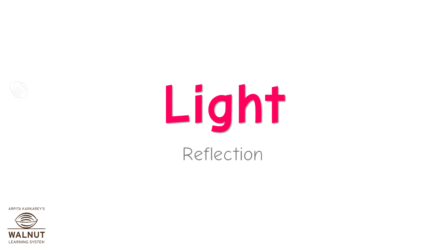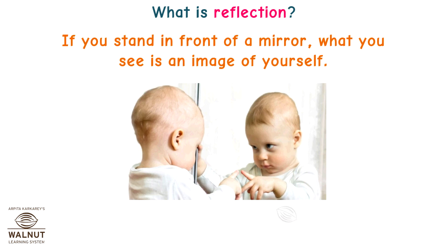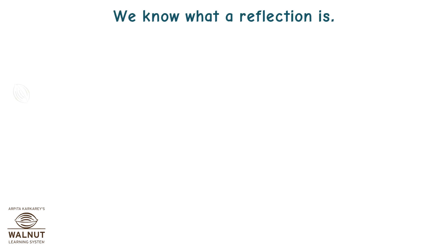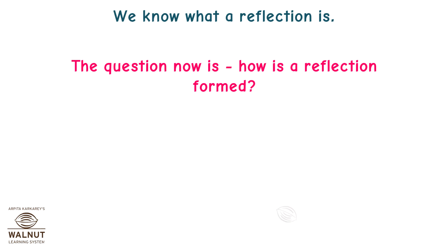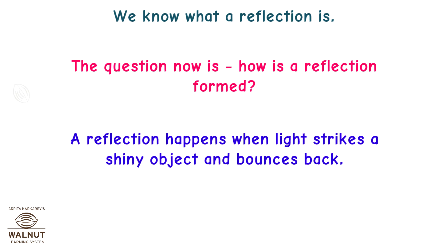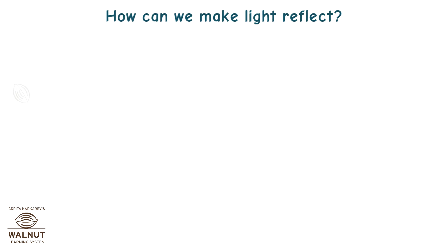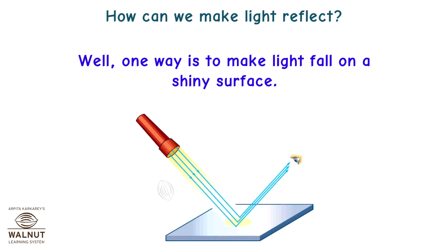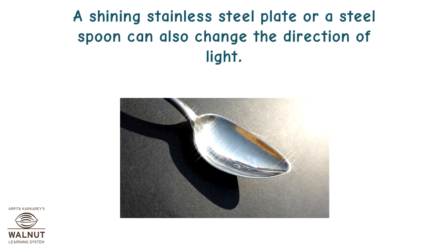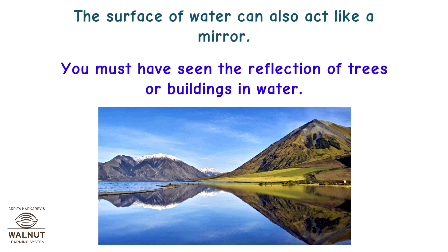Light reflection. What is reflection? If you stand in front of a mirror, what you see is an image of yourself — this is a reflection. A reflection happens when light strikes a shiny object and bounces back. One way to make light reflect is to make it fall on a shiny surface. A shining stainless steel plate or a steel spoon can also change the direction of light. The surface of water can also act like a mirror. You must have seen the reflection of trees or buildings in water.